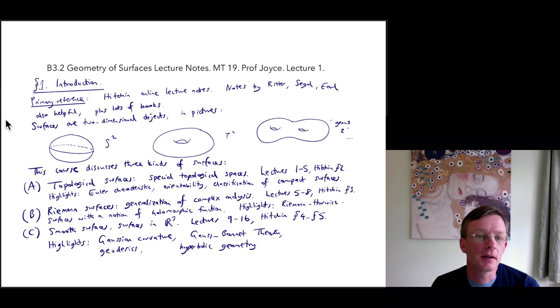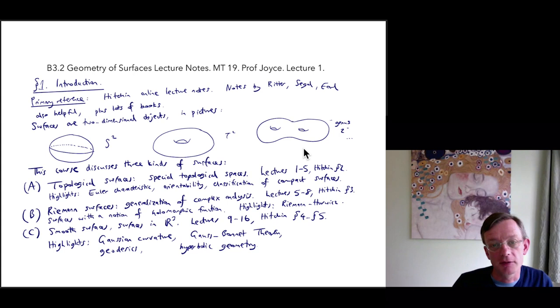So surfaces are two-dimensional objects. In pictures, here is the two-sphere, here is the two-dimensional torus, this would be a surface of genus 2, and so on. There are many different kinds of surfaces.